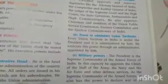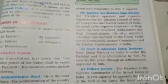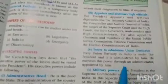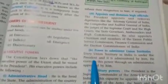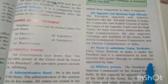Power to administer union territories: every union territory in India is under the President and is administered by him. There are now nine union territories, including Jammu, Kashmir, and Ladakh. However, he does not administer them directly — he appoints an administrator to look after and administer each union territory.